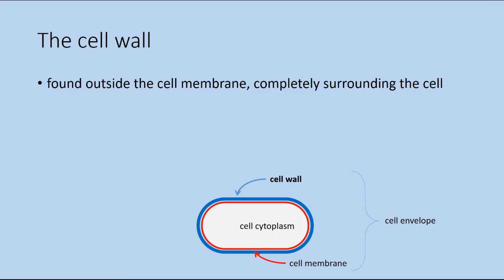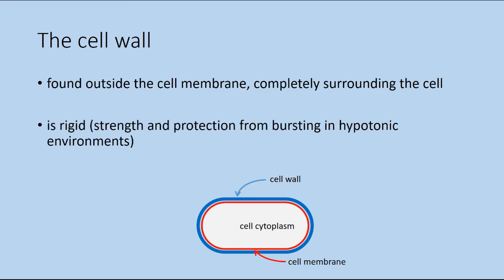A cell wall has two major roles. The first is that the cell wall is a very rigid structure. It adds strength to the cell and protects it from bursting in a hypotonic environment. A good example of a hypotonic environment is pure water. A cell that doesn't have a cell wall will burst open, or lyse — the process is called lysis — when too much water enters the cell.